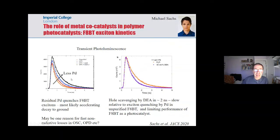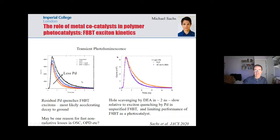Rather interestingly, this palladium has quite a large impact on the photophysics. When you purify F8BT, the exciton lifetime doubles, clearly indicating that the palladium is quenching the excitons in this polymer. That's relevant for these photocatalysts, but it may also have wider relevance for organic solar cells and photodetectors, because most of the materials we use in our solar cells and photodetectors have not been purified to remove the metal.